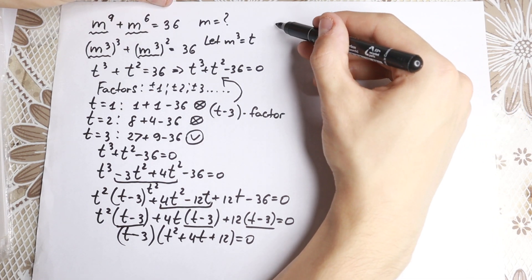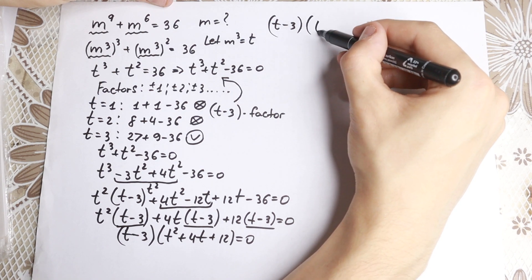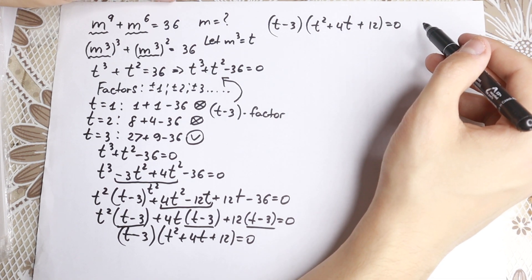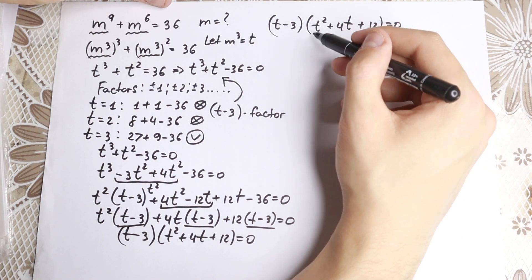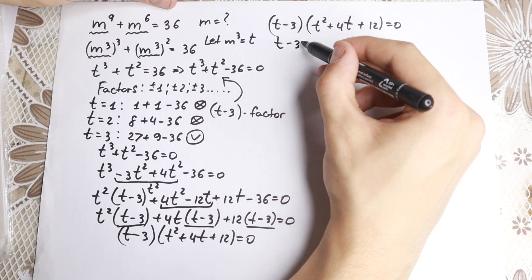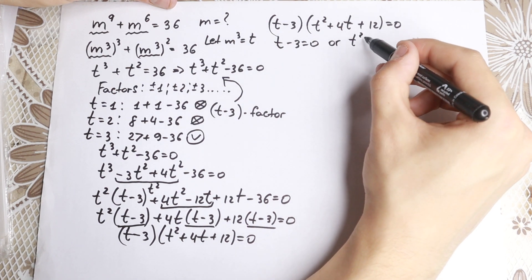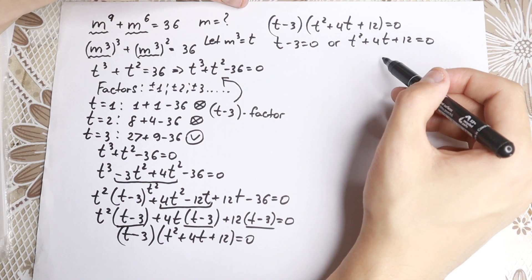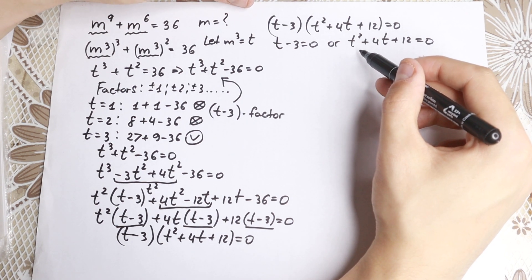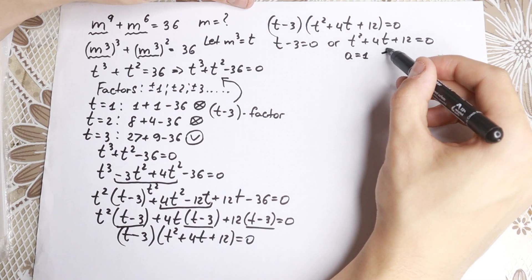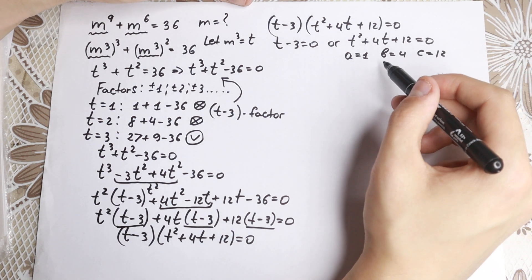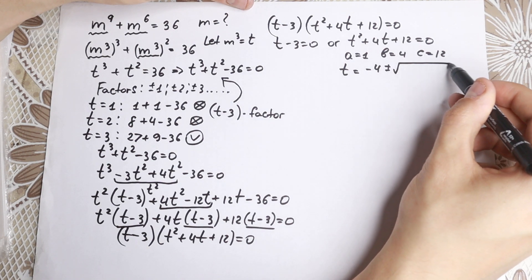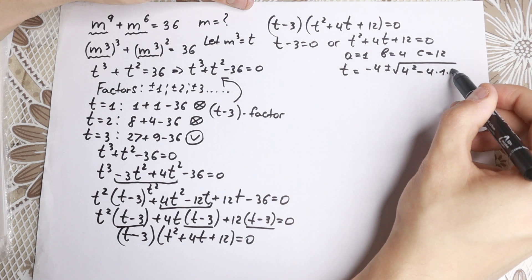So we have (t minus 3)(t-squared + 4t + 12) = 0. Either t minus 3 equals zero, or t-squared + 4t + 12 equals zero. Let's solve this quadratic equation with a=1, b=4, c=12. Plugging in: t equals minus b plus or minus the square root of b-squared minus 4ac, all over 2.